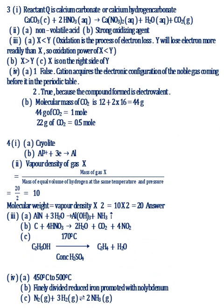Question 3. Part 1: Reactant Q is calcium carbonate or calcium hydrogen carbonate. Equation is given. Part 2: a non-volatile acid, b strong oxidizing agent. Part 3: a A, X less than Y. Oxidation is the process of electron loss. Y will lose electrons more readily than X, so oxidation power of X is less than Y. b X greater than Y. c X is on the right side of Y. Part 4: a 1 False. Cation acquires the electronic configuration of the noble gas coming before it in the periodic table. 2 Answer True, because the compound formed is electrovalent. Part B, Answer 0.5 mole.